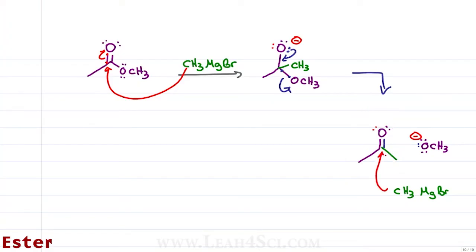It doesn't care that you started with an ester, all it knows is there is a reactive ketone and it wants to attack. Once again, the pi bond collapses upward to give us an O minus. We have the initial methyl group from the first Grignard attack and a second methyl group from the subsequent Grignard attack.